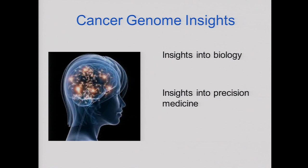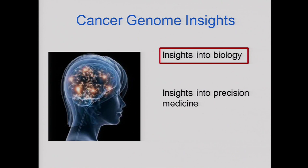I'd like to give some examples of what we learned biologically, and then move to the implications for precision medicine. This is one of these areas where there has been an active conversation — some would even say an argument — about the relative benefits of large-scale, expensive, government-funded projects versus traditional R01-funded research. I think it has been the case that these large-scale projects have taken us in directions crucially important for cancer biology and therapy that many of us were not thinking about before these projects started.